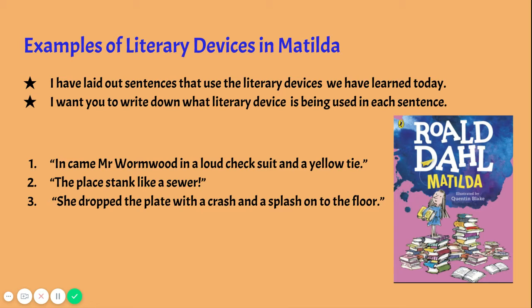Now we're going to look at examples of literary devices in the book Matilda. I've laid out three sentences here that use literary devices we've learned today. I want you to write down what literary device is being used in each. The first sentence is: 'Mr. Wormwood in a loud check suit in a yellow tie.' The second is: 'The place stank like a sewer.' The third is: 'She dropped the plate with a crash and a splash onto the floor.' Pause the video and write down what device is being used in each.